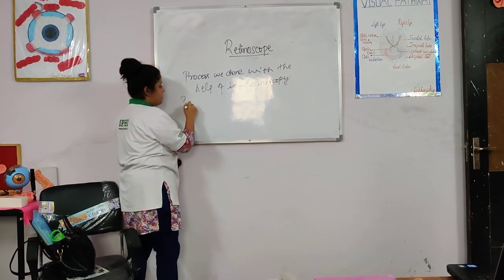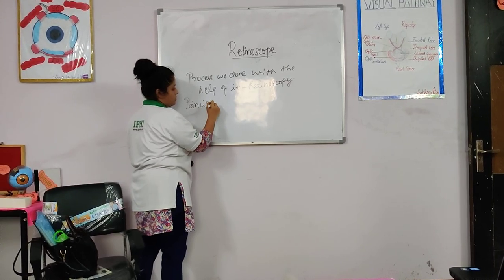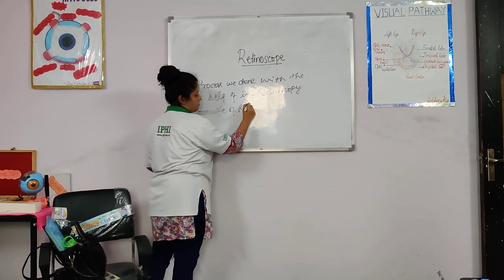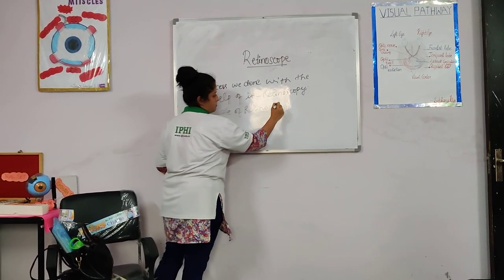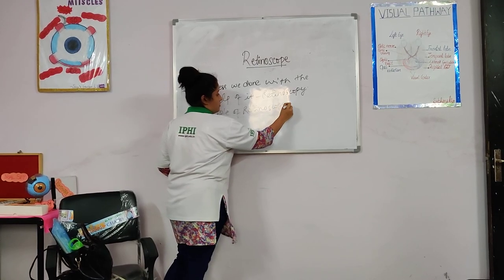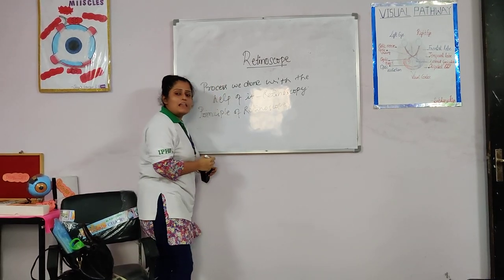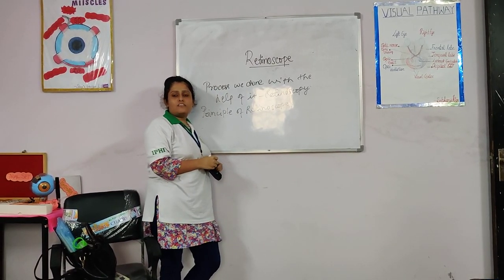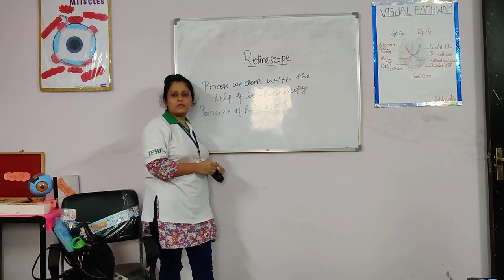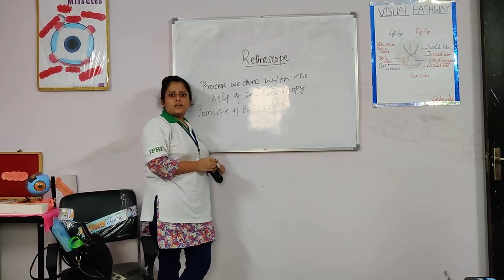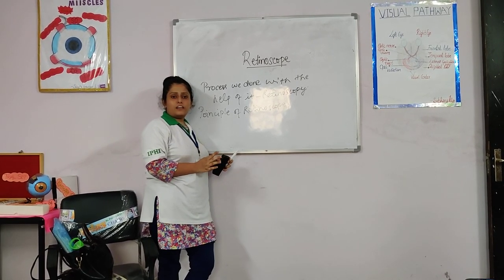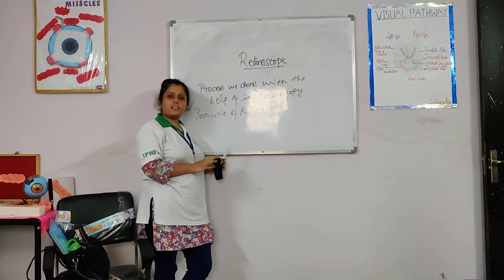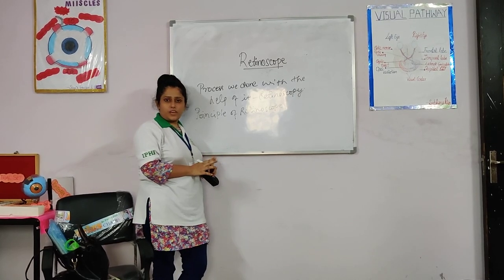Principle of retinoscopy: when the parallel rays of light come into the patient's eye and follow the pathway, the refractive error or the reflection is completely dependent on the pathway of the patient's eye.